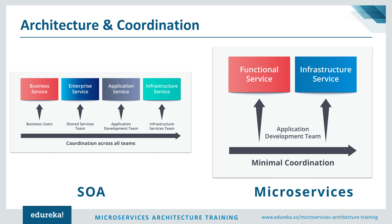Application services can be invoked directly or through a user interface. Infrastructure services refer to non-business or non-technical operations such as auditing, scaling, or security. In microservices architecture, you do not have as many types of services — you just have a functional service and an infrastructure service. The functional service is basically the combination of a business service, enterprise service, and application service, and is a fine-grained service that performs exactly the task related to a particular feature. The infrastructure service here is similar to the one in SOA, handling non-business operations such as security, auditing, and logging.